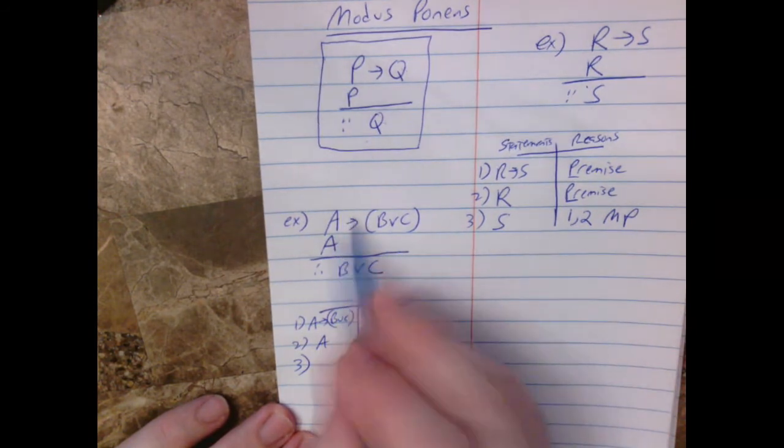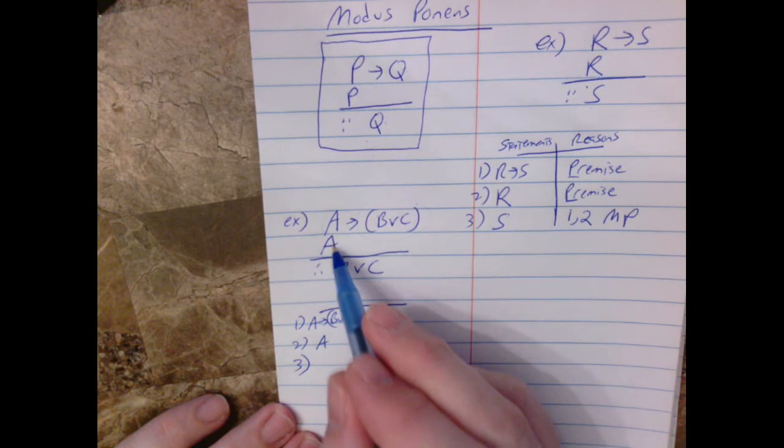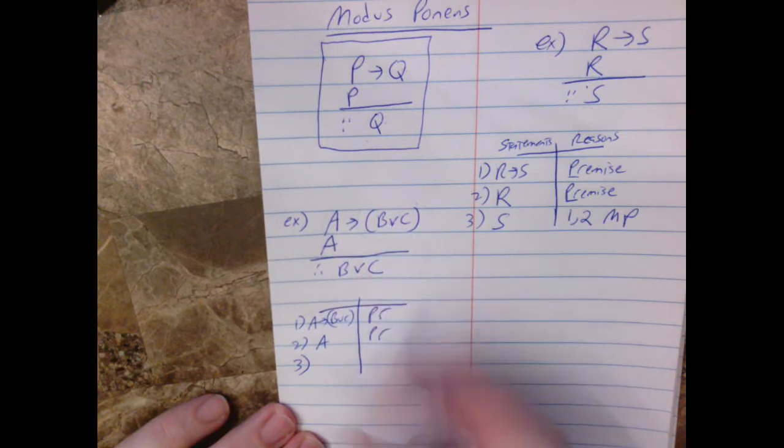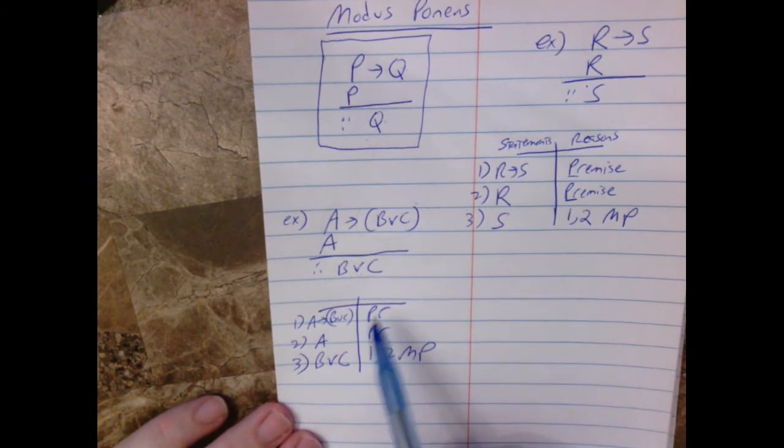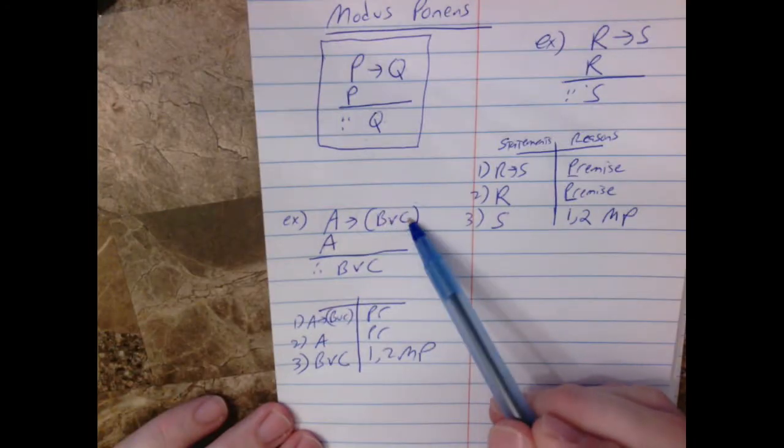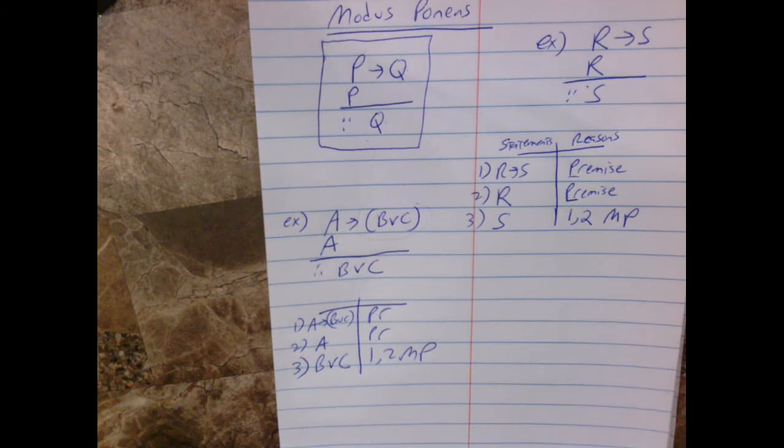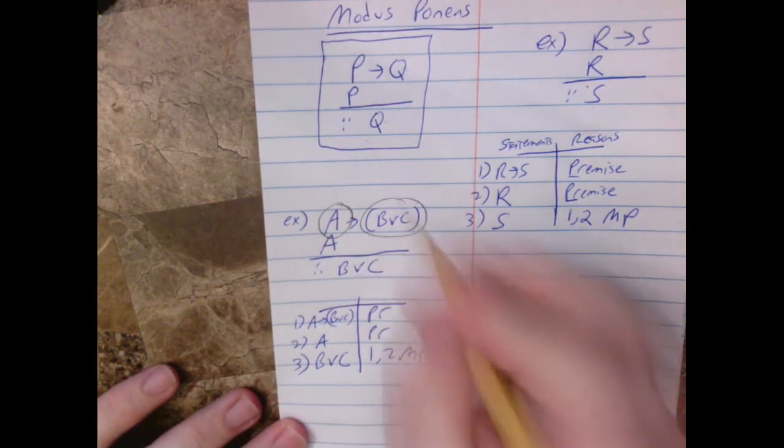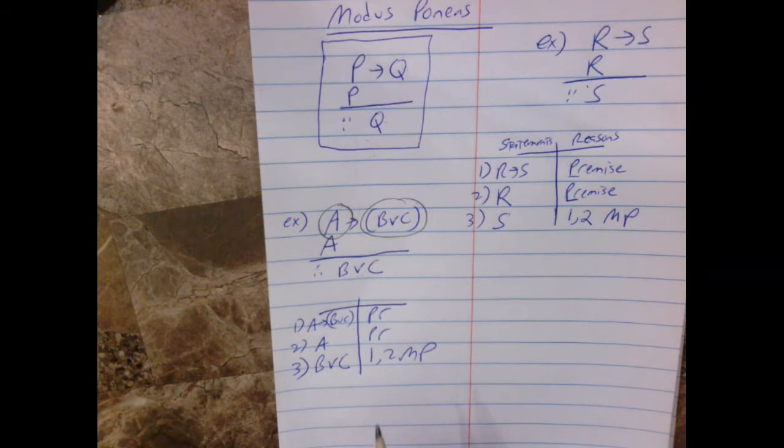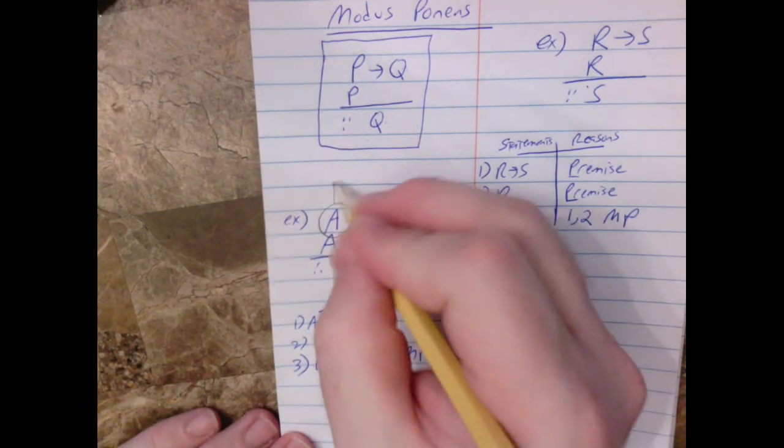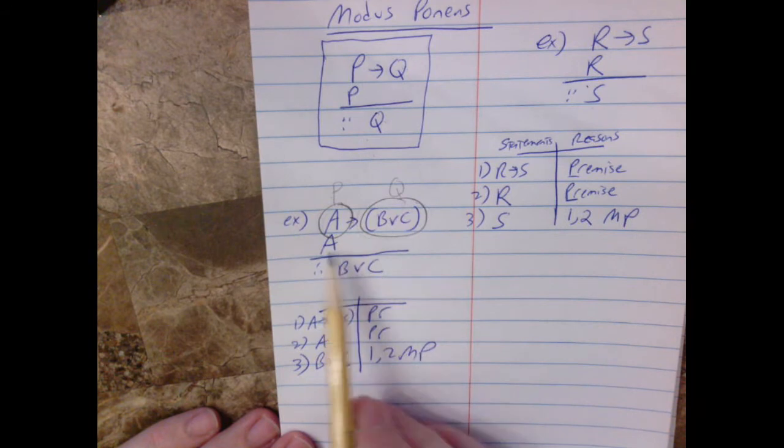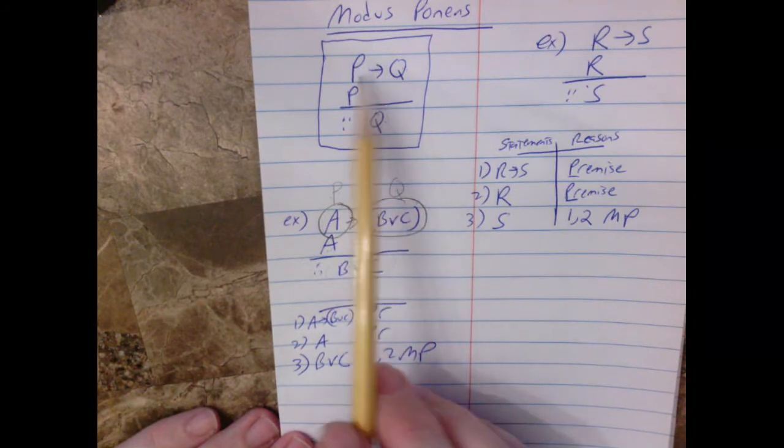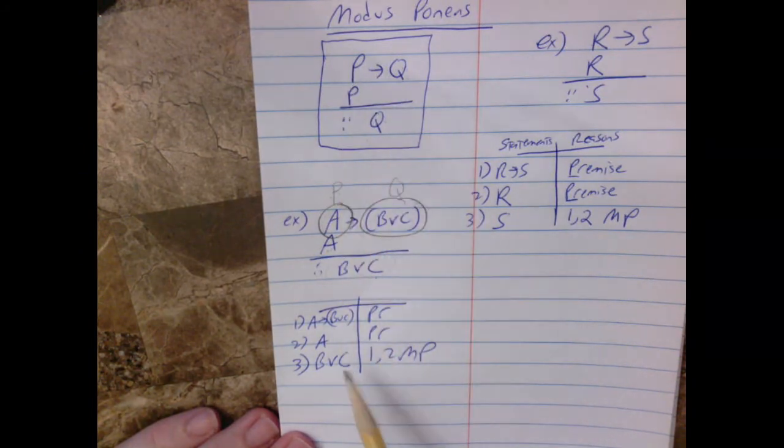So since this implies that, and we have this, we can conclude that, B or C, using one and two modus ponens. So this example is showing you that it doesn't matter that there's multiple terms here. It's still a this and a that. I know some people in class the other day when we were doing this tried to sort of substitute in their minds. You know, this is essentially the P and this is essentially the Q. So if P then Q, well, we have P, therefore we have Q. You don't have to do it that way. Just sometimes it helps people to kind of visualize the original. But that's the idea for modus ponens.